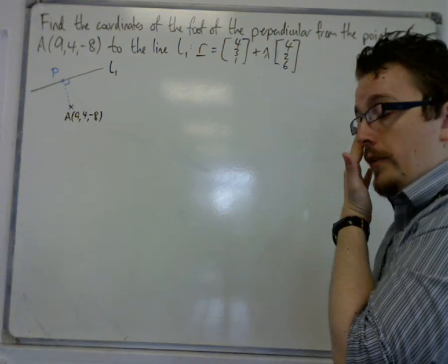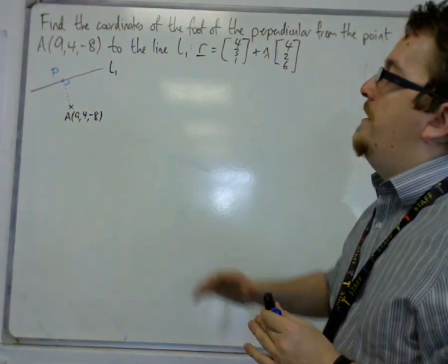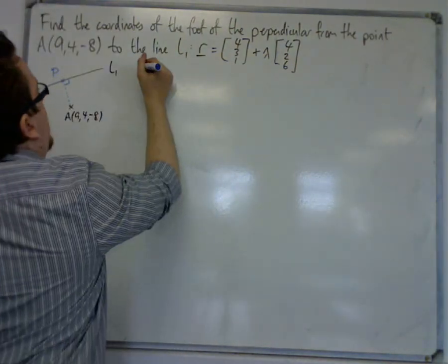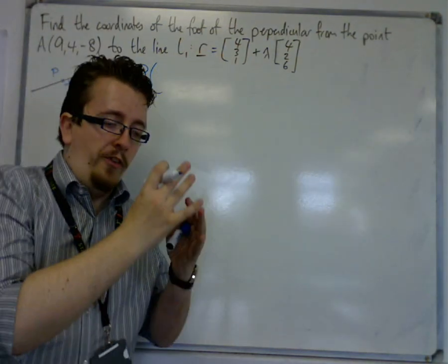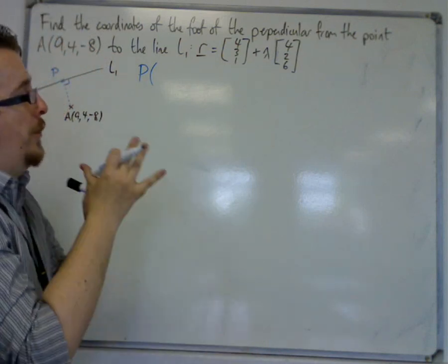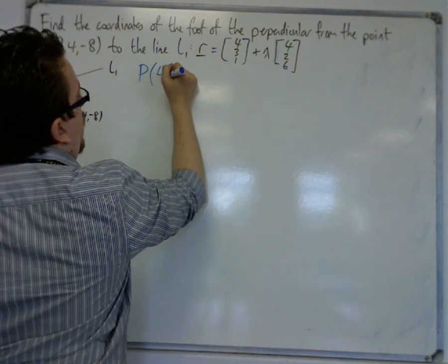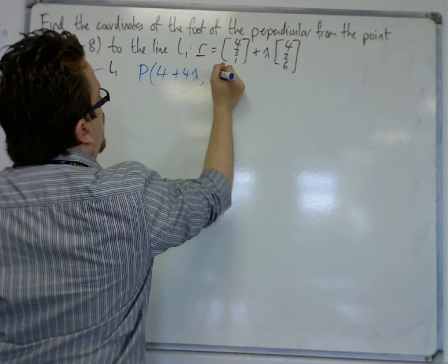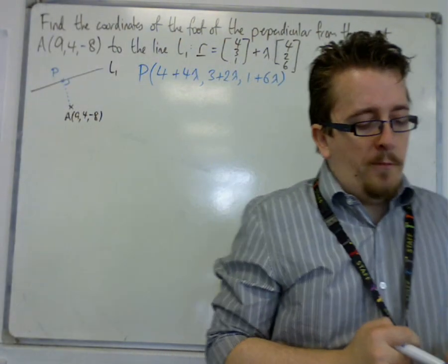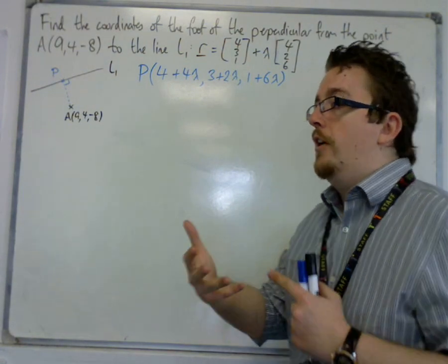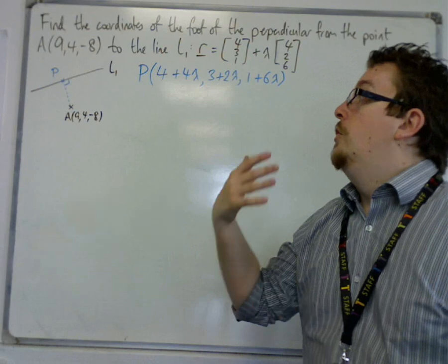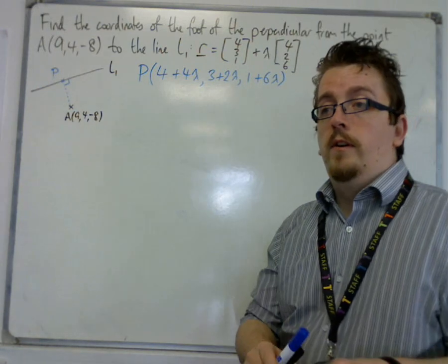So how do we find these coordinates? Well, once we've decided that P should be the coordinates that we're looking for, we can say that P, because it is a point on the line L1, we can give it coordinates 4 plus 4 lambda, 3 plus 2 lambda, and 1 plus 6 lambda. Now the reason why we can do this is because there will be a value of lambda such that P is this point that we are looking for. So in effect, what we're doing is we're trying to find the lambda that will work for this problem, that will give us the point P.